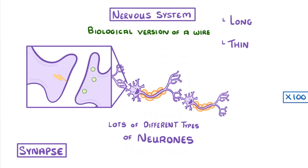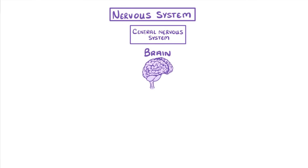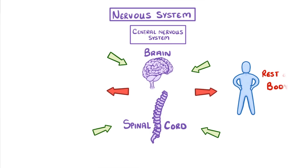Now, imagine that you took 100 billion of these and added them all together — what you could have is the whole nervous system. One part of this is the central nervous system, which is made up of our brain and our spinal cord. This is where all of the so-called thinking takes place. It takes in loads of sensory information, decides what needs to be done about it, and then sends out orders to the rest of the body.